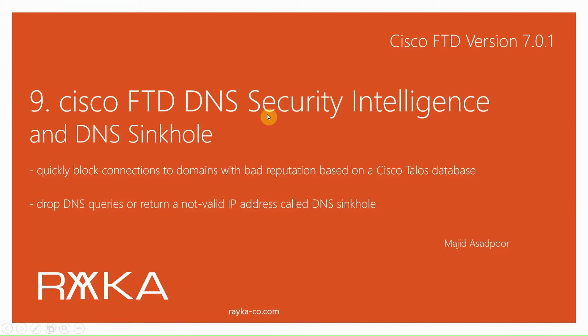Cisco FTD DNS security intelligence is used to quickly block connections to or from domain names with bad reputation, based on a database created by Cisco Talos security group. You have the option to drop DNS queries for malicious domain names, or return a specific not-valid IP address called DNS sinkhole, to redirect users to that sinkhole IP address and log users accessing malicious domains.